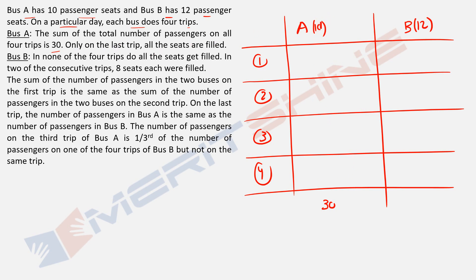So how many seats are there? 10. So how many would be filled on the last trip? All 10. And for all the other trips, the passengers would be less than 10.